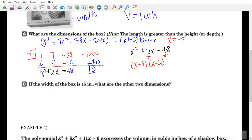So the hint says is my length is greater than my height. So that means my length has to equal x plus 8, and my height has to equal x minus 6. So my full volume equals length times width times height. So x plus 8 times x plus 5 times x minus 6. Okay.